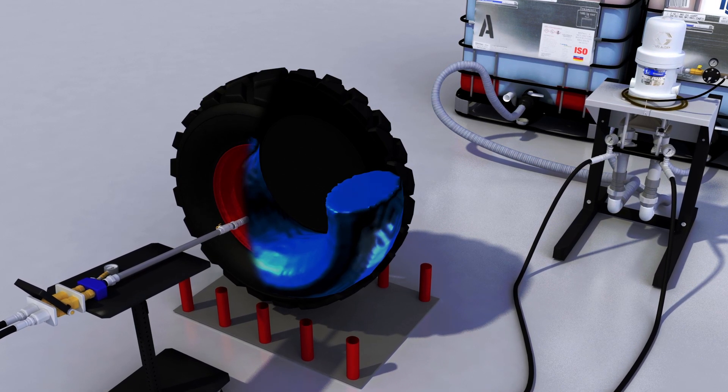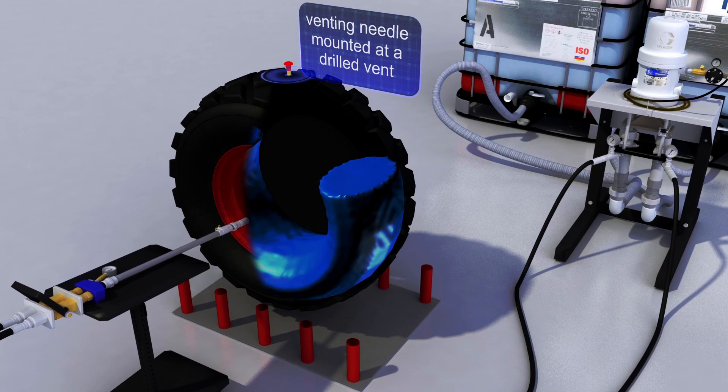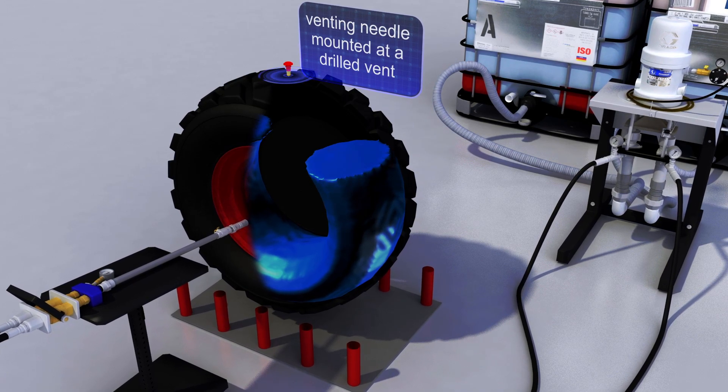During the hole filling process, the waste air leaks from the tire through the venting needle mounted at a drilled vent on the tire tread.